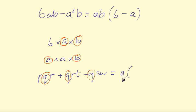So put the Q out the front. And in brackets, it's the letters that are left over. So PR and then plus, if I've taken out Q, I'm left with an RT. And then negative SW. All right. So that's the factorization of that expression. Let's just do a couple more.